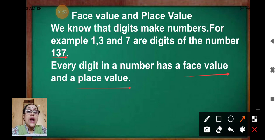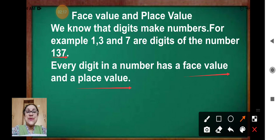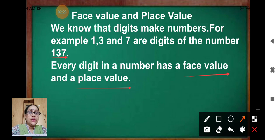Some of you sit in the first row, second row, third — like this. You all have places. Like that, numbers also have a place — that is in hundreds, tens, ones. To find out the place value, we have to find out the place of the digit.